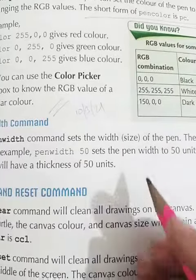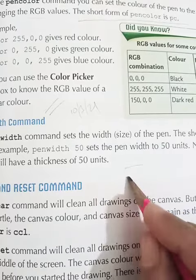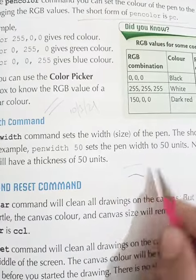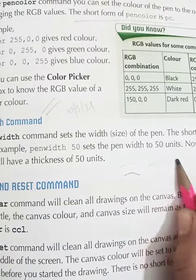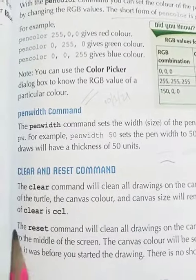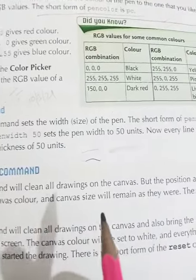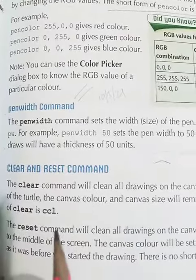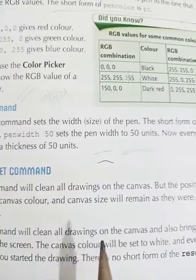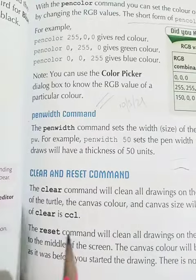It controls how much thickness a line should have — it will be like this, or like this, or like this. Next is the clear and reset commands. The clear command will clean all drawings on the canvas, but the position and angle of the turtle, the canvas color, and canvas size will remain as they were. The short form of clear is CCL.